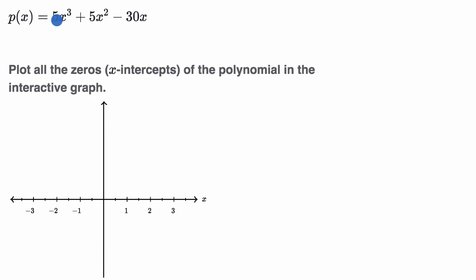So we're given p of x, it's a third degree polynomial, and they say plot all the zeros, or the x-intercepts, of the polynomial in the interactive graph. And the reason why they say interactive graph, this is a screenshot from the exercise on Khan Academy where you could click and place the zeros.